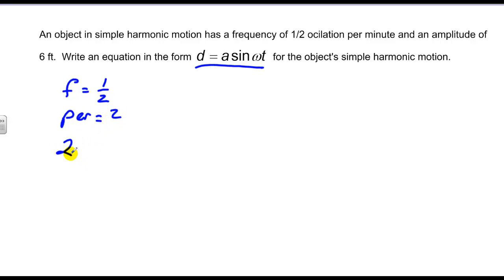We know that the frequency is equal to a half, so therefore the period is equal to 2, and if 2, which is a period, is equal to 2π over omega, or k, or whatever you want to call it, then omega is equal to π. And then we know that we have an amplitude of 6, so that goes into the A value, so d in this case is equal to 6 sine of π t.